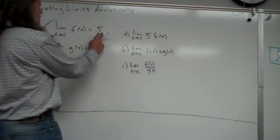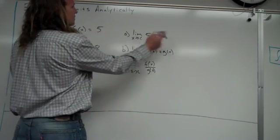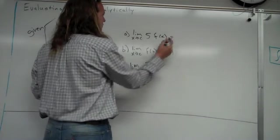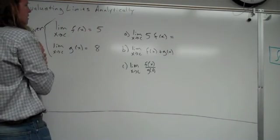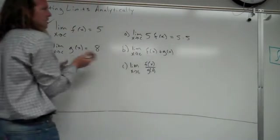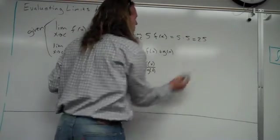So if we know that this is true, then if we're taking the limit as x approaches c of 5 times the function f(x), then the limit is just going to be 5 times whatever the limit was back here. So it's just going to be 5 times 5 since we know the limit as x approaches c of f(x) is 5. So that answer would be 25.